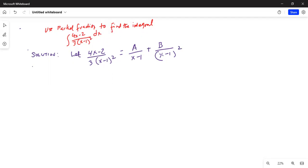These are two partial fractions. We can write 4x minus 2 equals 3A times (x minus 1) plus 3B.